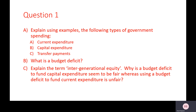Now I'd like you to think about these questions: a) What do we mean by the following types of public expenditure — try to put down some examples for each; b) What is the budget deficit; c) What do we mean by intergenerational equity, and why is a budget deficit to fund capital expenditure seen as more acceptable than one used to fund current expenditure? Hit pause, write down your answers, and when you're comfortable hit play.